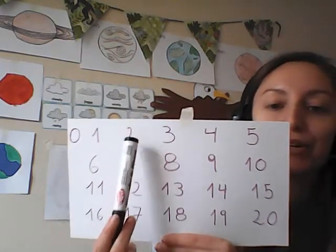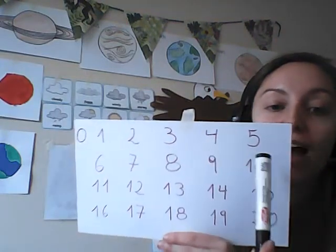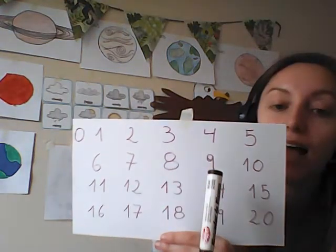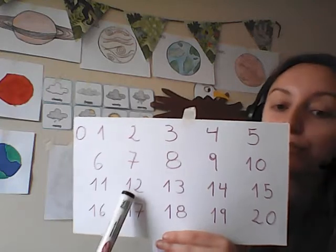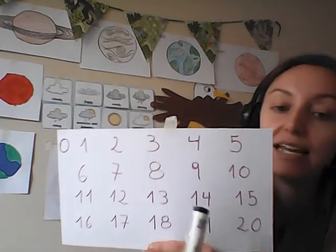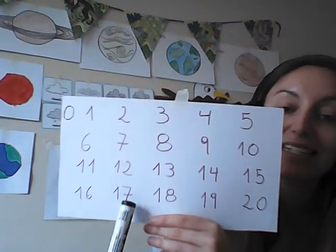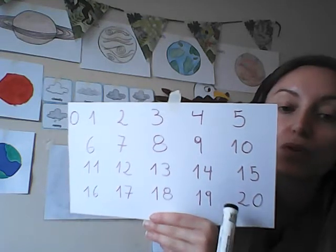One, two, three, four, five, six, seven, eight, nine, ten, eleven, twelve, thirteen, fourteen, fifteen, sixteen, seventeen, eighteen, nineteen, twenty. That's it. Yes, we have got 20 numbers there.